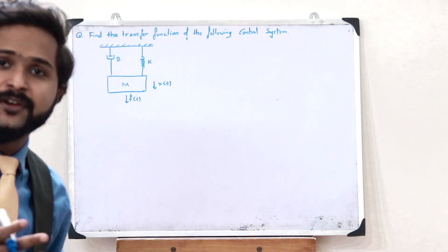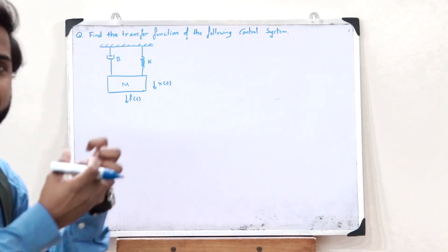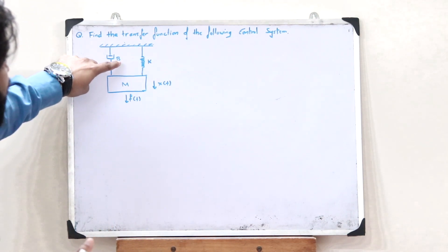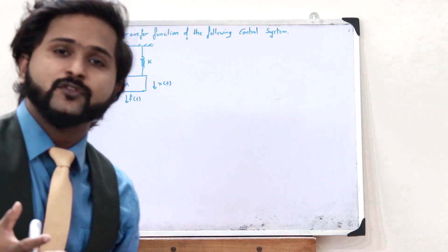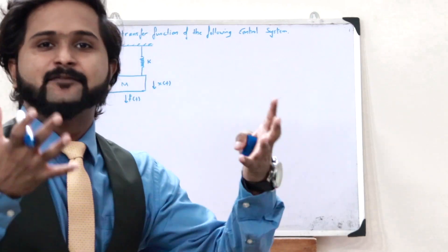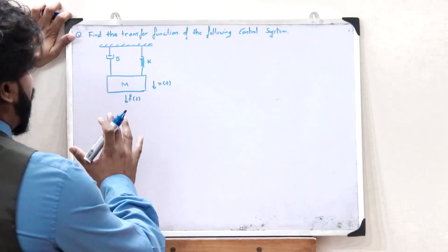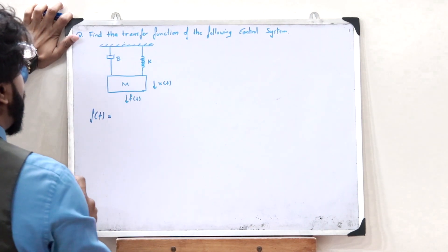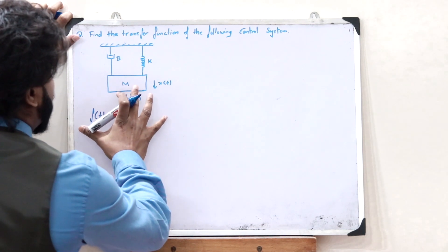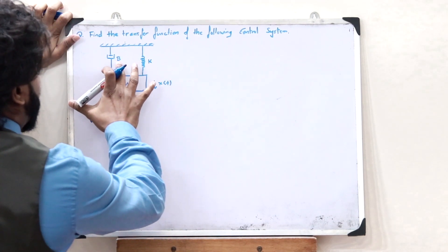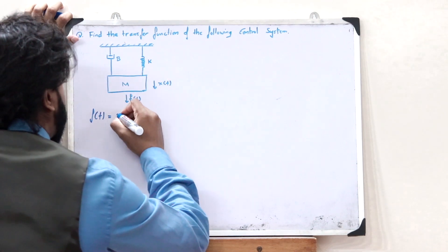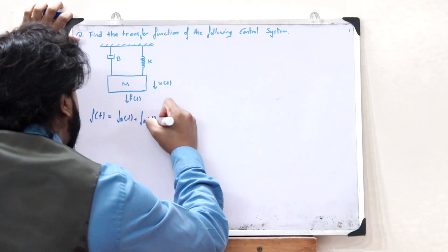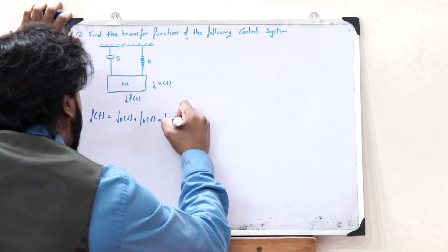In the previous videos, we saw how we can calculate the restoring forces that develop in a particular mass, a particular damper, and a particular spring. If you haven't watched those videos, please do watch them. So, the force F of T is equal to the sum of the restoring forces developed in mass M, the dashpot, and the spring. That is, F of T is equal to FB of T plus FK of T plus FM of T.